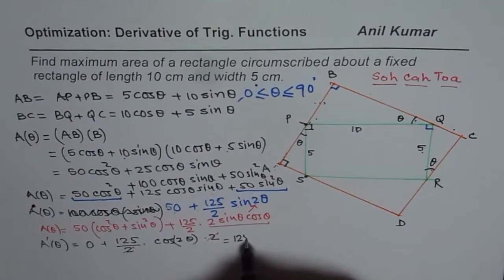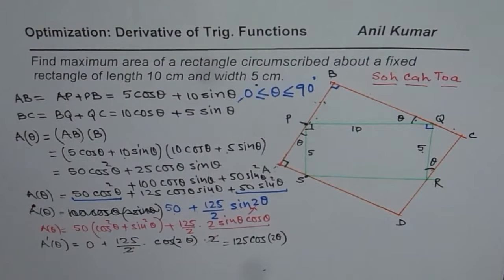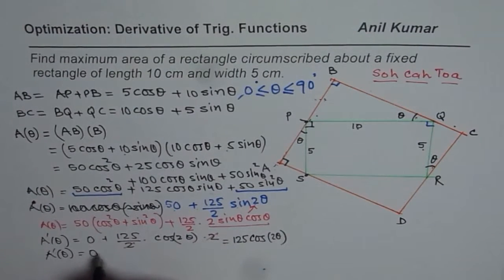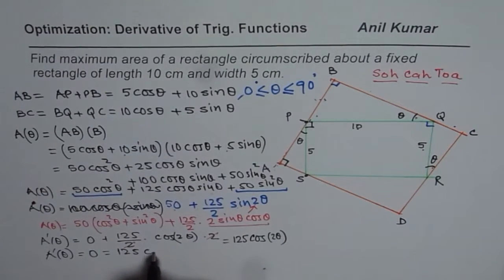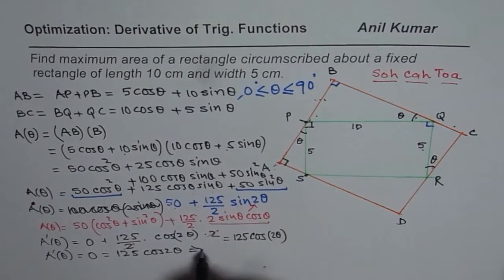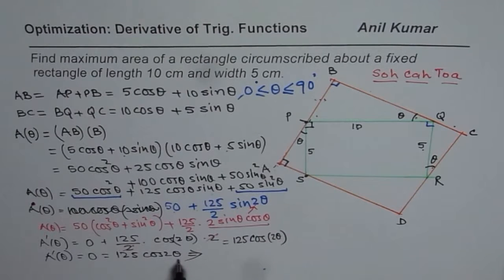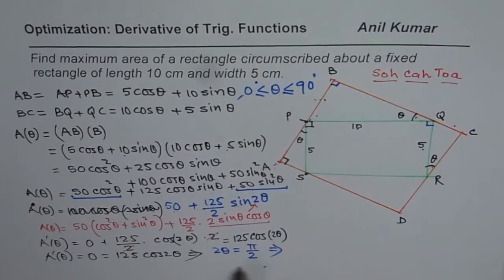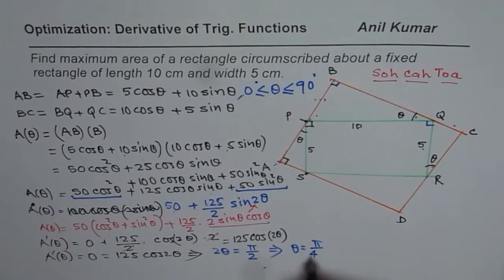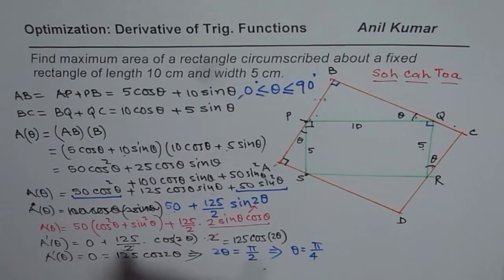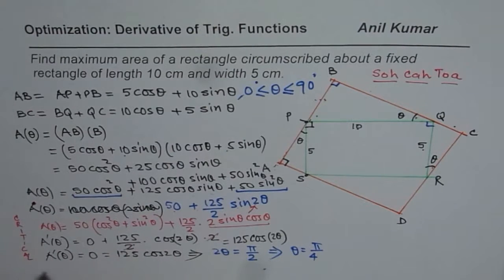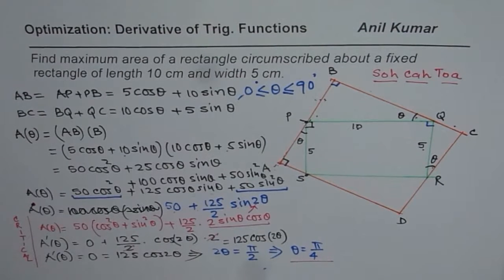To find the critical number, this derivative should equal 0. So 125 cos 2 theta equals 0, which means cos 2 theta equals 0. Cos 2 theta is 0 when 2 theta equals pi over 2, or theta equals pi over 4. So the critical number is theta equals pi over 4.